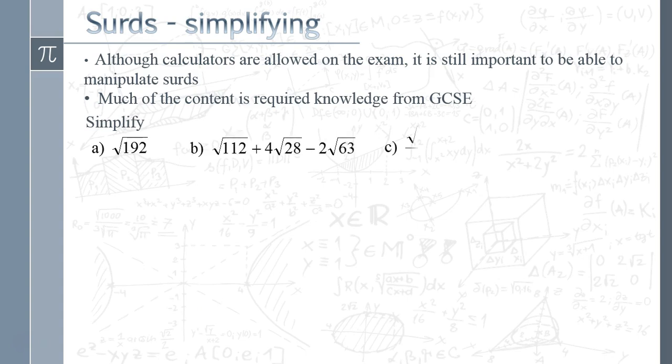There's four examples that we're going to deal with. The first one, example a, is just a straightforward simplifying surds question. Can we take √192 and write it in a simpler fashion? So what we're going to do is split that down into two factors of 192. There's any number of ways of doing this.